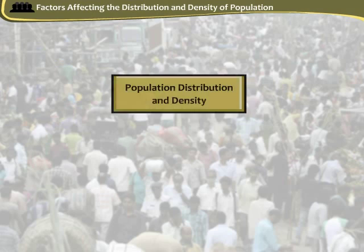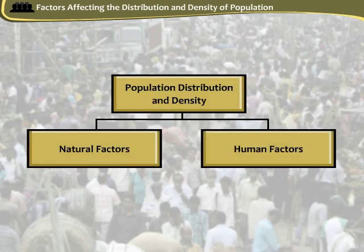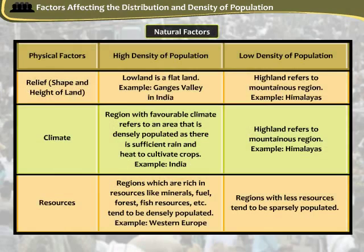Population distribution and density are affected by natural factors and human factors. Natural factors that affect high density and low density of population in three ways, namely relief, climate, and resources.